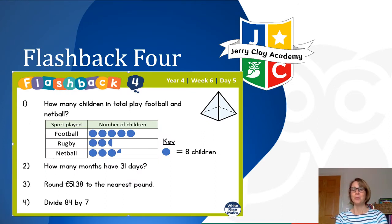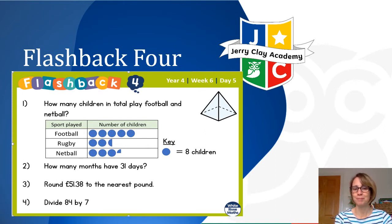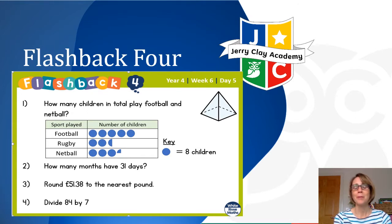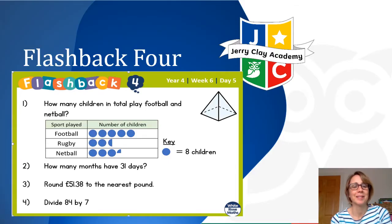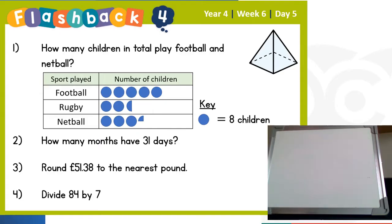In our flashback for today: question one — a pictogram asking how many children in total play football and netball; question two — how many months have 31 days; question three — round £51.38 to the nearest pound; question four — divide 84 by 7; and then name the 3D shape in the top right-hand corner. Pause the video and have a go.